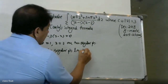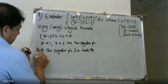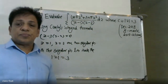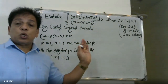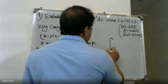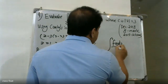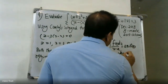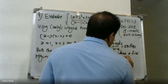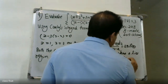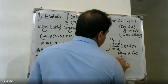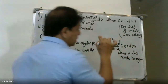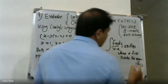Both singular points z = 1 and z = 2 lie inside the region |z| = 3, so we can apply Cauchy's integral formula. Cauchy's integral formula states that the integral of f(z)/(z-a) dz = 2πi · f(a), where a lies inside the region.